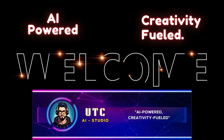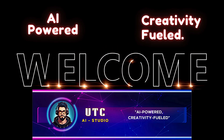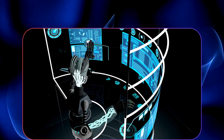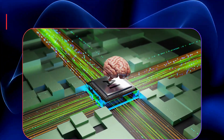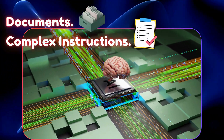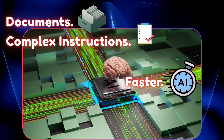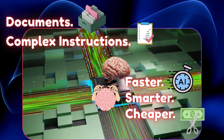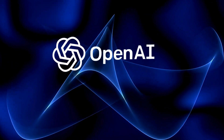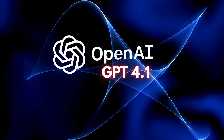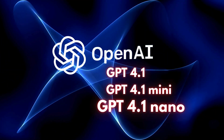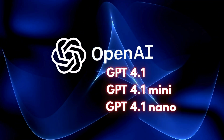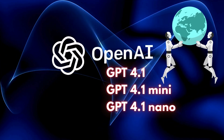Hey tech lovers, welcome to UTC AI Studio. Imagine an AI that's not just improving at writing code, but one that can understand entire documents, follow complex instructions, and do it all faster, smarter, and cheaper than ever before. Today we are diving into OpenAI's latest innovations: GPT 4.1, GPT 4.1 Mini, and GPT 4.1 Nano. These aren't just upgrades — they're game changers in the world of AI.